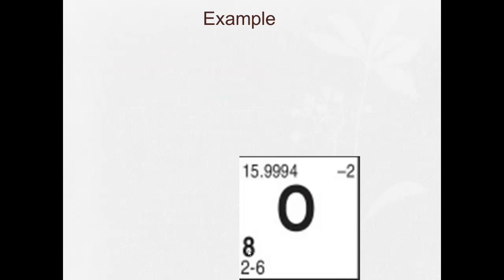So, we'll do oxygen. The atomic number is eight. So, in the nucleus, there's eight protons. The mass number, we'll say, is 16. So, there's also eight neutrons. So, I'm going to draw, I have two electrons in the first shell. One, two, six in the second. One, two, three, four, five, six.